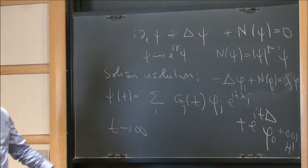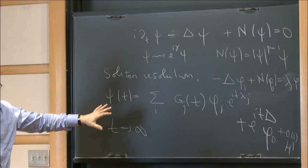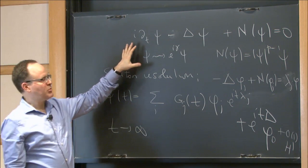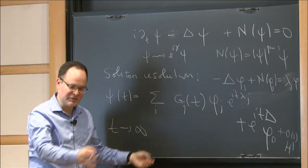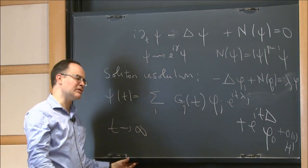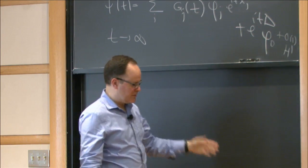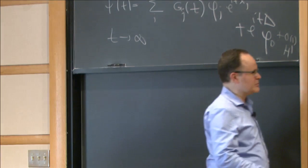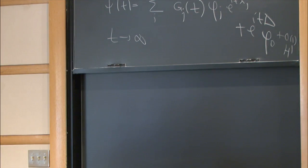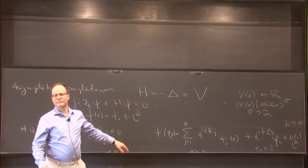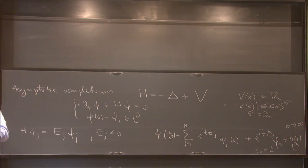We do not have anything like this in general. In the completely integrable case — yes, you have the inverse scattering transform. But in general, when you're not completely integrable, you don't have that. I guess we have a many-body version of this statement. To some extent, the nonlinear theory should be an effective theory arising from the many-body.